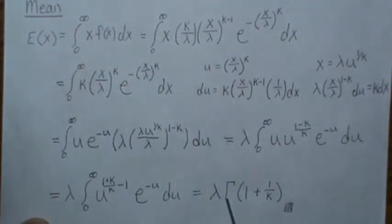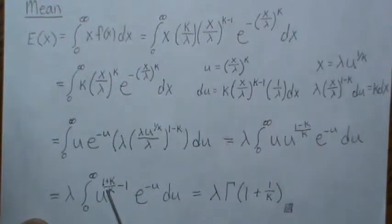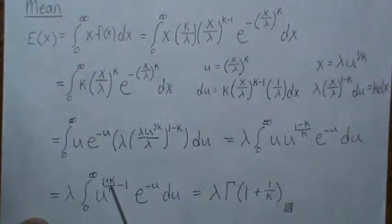It is a gamma function, so the lambda comes out front and this is the alpha parameter in the gamma function. So it's gamma of 1 plus 1 over k. And if you look at this, you can divide each by k and get the 1 and the 1 over k. So this is the mean of a Weibull distribution.